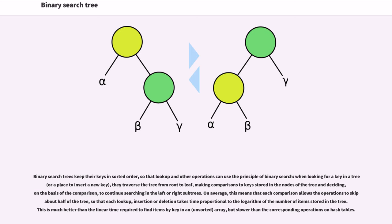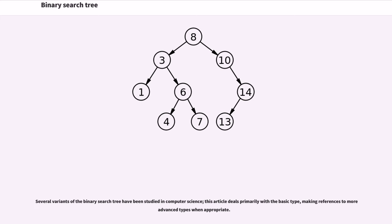On average, this means that each comparison allows the operations to skip about half of the tree so that each lookup, insertion, or deletion takes time proportional to the logarithm of the number of items stored in the tree. This is much better than the linear time required to find items by key in an unsorted array but slower than the corresponding operations on hash tables. Several variants of the binary search tree have been studied in computer science.